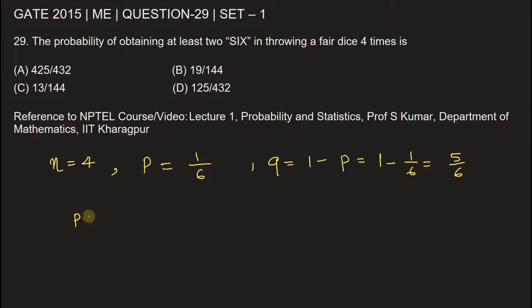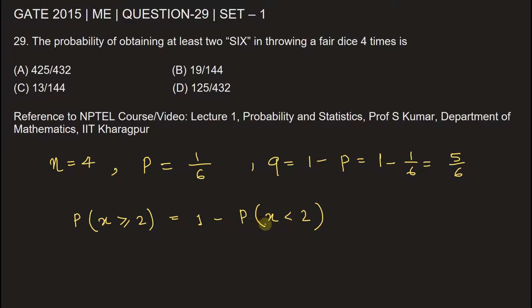Now, probability of obtaining six at least two times, that means minimum two times or it can be greater than two times. We'll write x greater than or equal to two will be equal to one minus probability of getting six less than two times, that means either one time or no time.